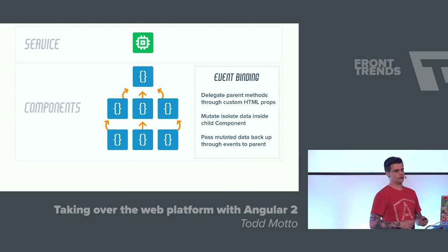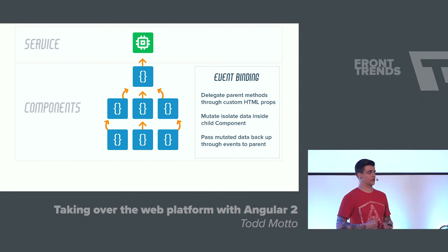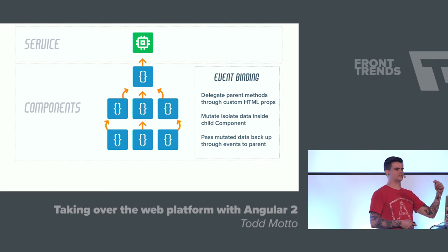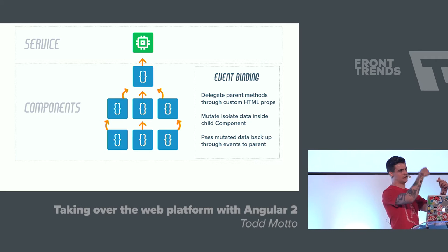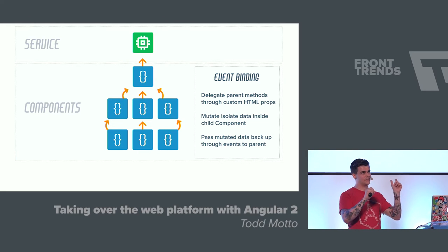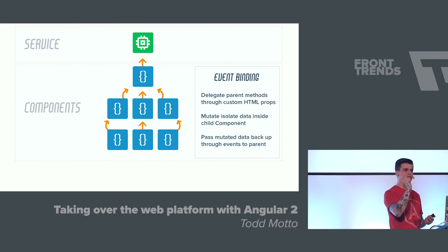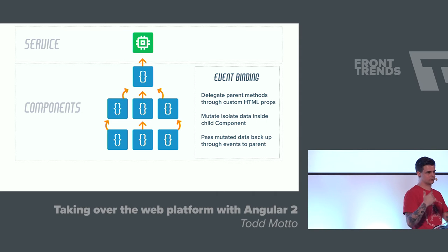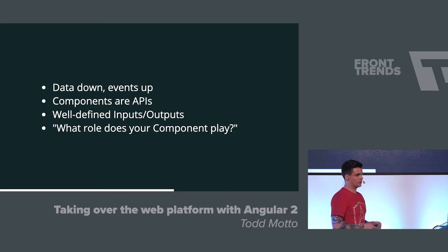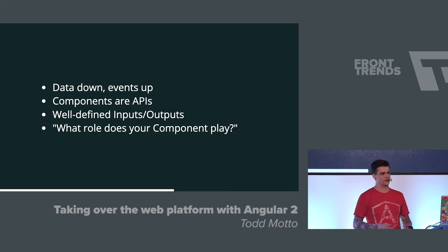We can pass it up to the child component, which might delegate another function, and then send it off to the service. For instance, if a user ticks a checkbox in Gmail, that passes an event back up to the parent, which registers the email that was clicked. Then you might have a function on the parent — the trash can icon — press that and it deletes it. So: data down, events up. It's as simple as that in one-way data flow.